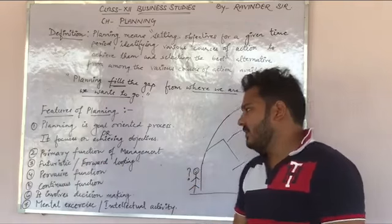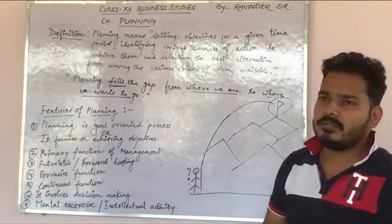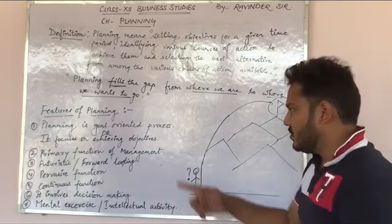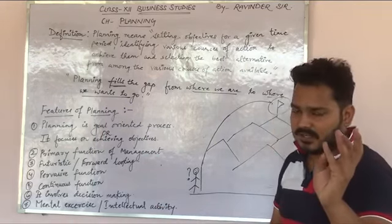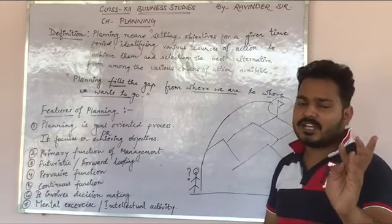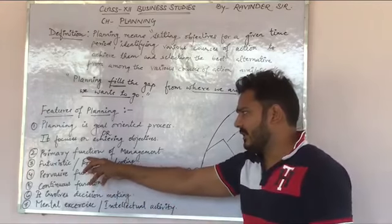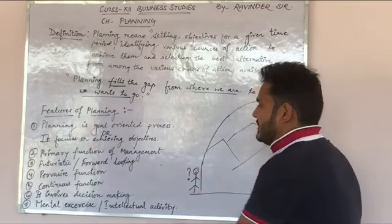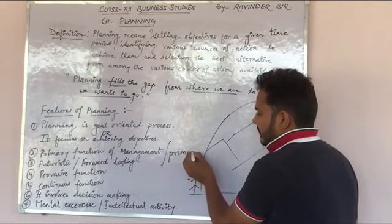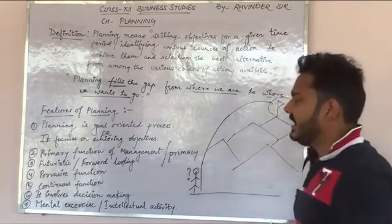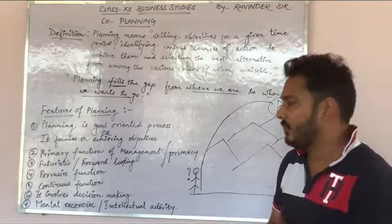Next: primary function of management. यह तो बहुत simple है — because we have discussed about the series of functions of management: first is planning, second is organizing, third is staffing, fourth is directing, and last one is controlling. Planning जो है वो primary function है, इसको हम primacy भी बोलते हैं — primacy of planning — यानि कि planning जो है वो सबसे पहला और basic function है for any kind of business.